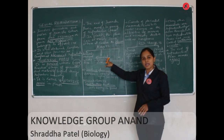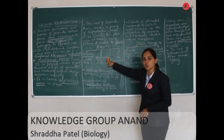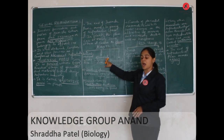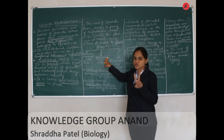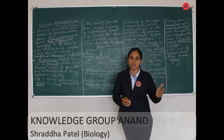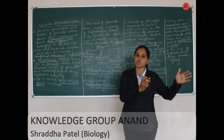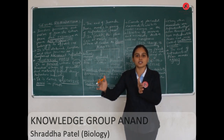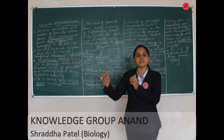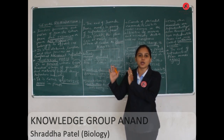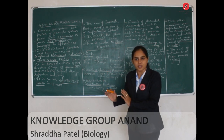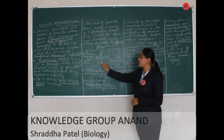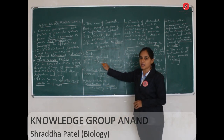Biennial plants complete their life cycle within two growing seasons. For example, in the first year they are in the juvenile phase, and in the second year they enter the reproductive phase, produce flowers and seeds, and finally die. Examples of biennial plants are carrot and lettuce.